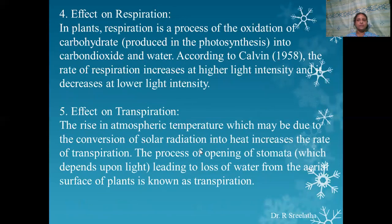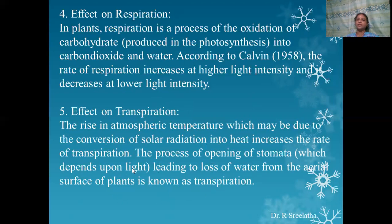Effect on respiration: in plants, respiration is the process of oxidation of carbohydrates produced during photosynthesis into carbon dioxide and water. According to Kelvin, the rate of respiration increases at higher light intensity and decreases at lower light intensity. Transpiration is also affected by light. The rise in atmospheric temperature, which is indirectly due to the conversion of solar radiation into heat, increases the rate of transpiration. The process of opening of stomata, which depends upon light, leading to loss of water from the aerial surface of the plant, is known as transpiration.